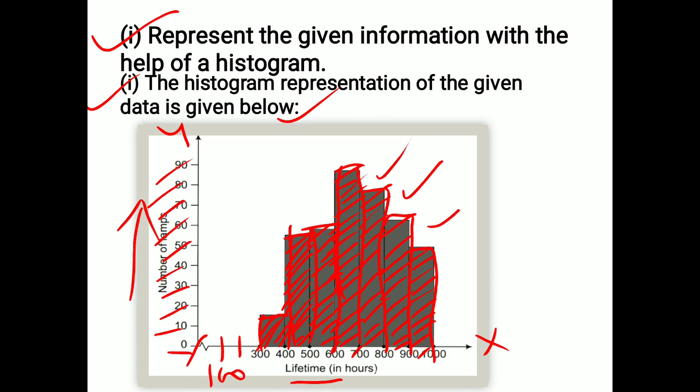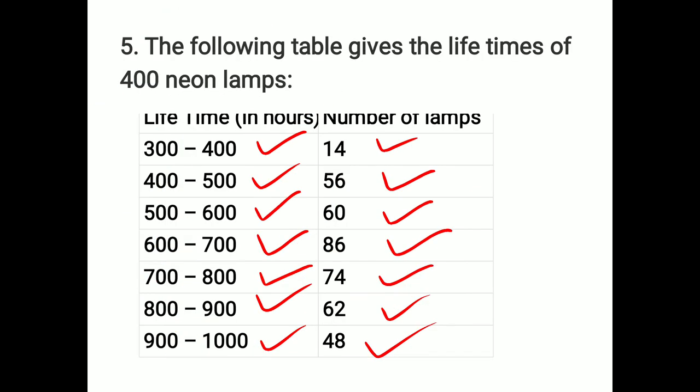In the same way, 1, 2, 3. These 3 are. So these are the values that are going to be in the same way: 74, 62, and 48. Right?